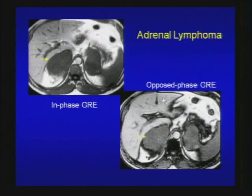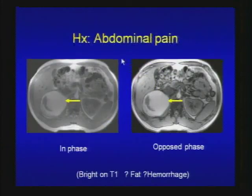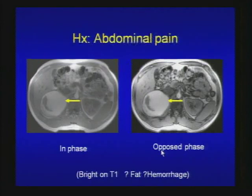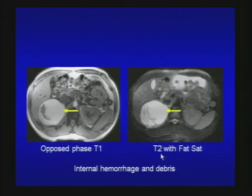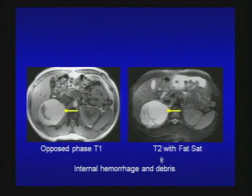The next case is a patient with abdominal pain: large right adrenal mass on in-phase and opposed-phase images — T1 bright. Is it fat or hemorrhage? On T2 with fat saturation it's still persistently bright, so this is not fat. These are internal hemorrhage and debris within a right adrenal pseudocyst. This is the answer to unknown case number three.